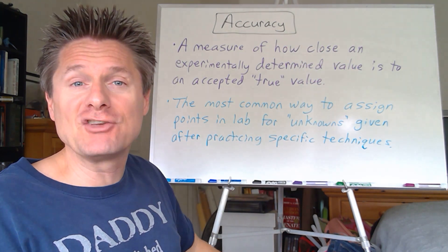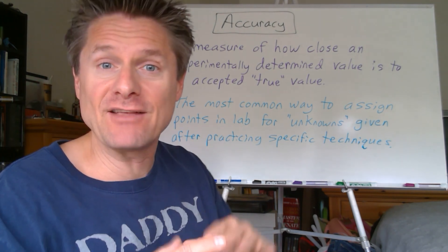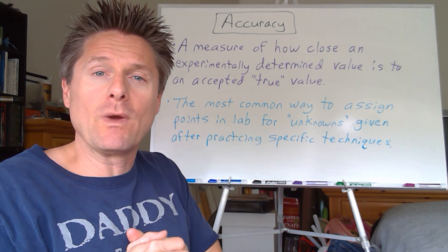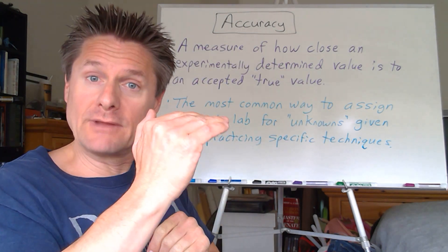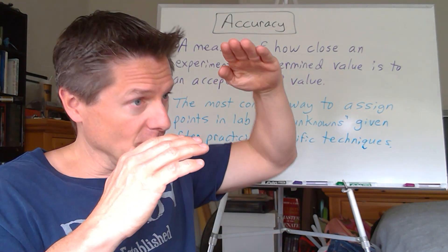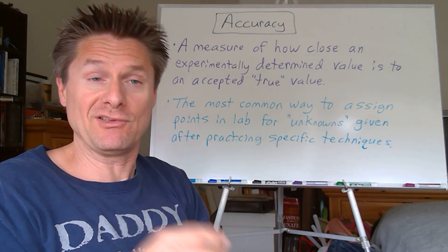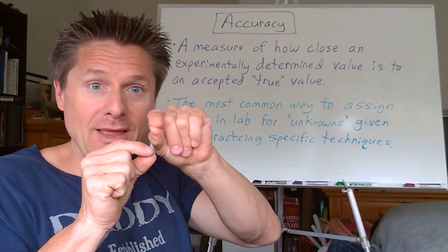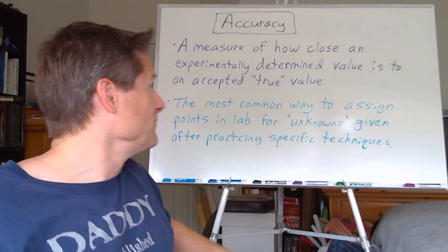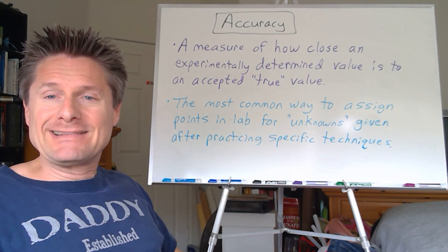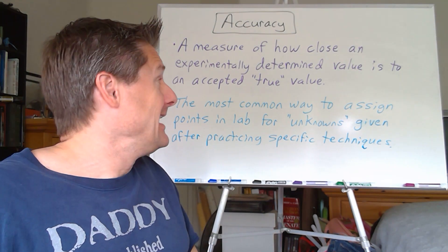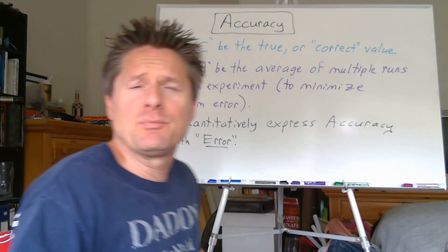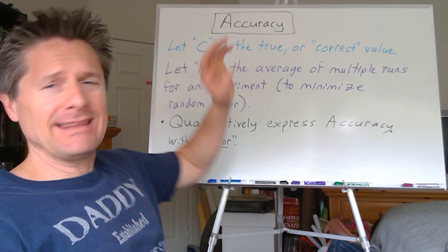Well over half your points in lab are going to be based on your accuracy. I'll show you how to calculate it, and I'll have a grading scale — so you give me a number and I go off a table. Based on your error you get this many points, just like hitting the yellow ring gives you three points, the bullseye ten, the white ring one.